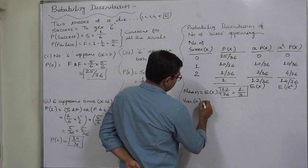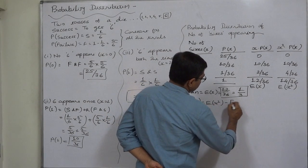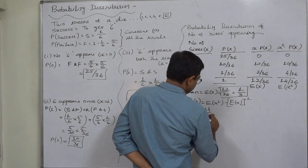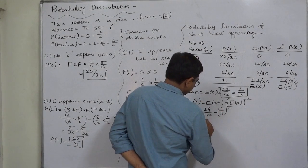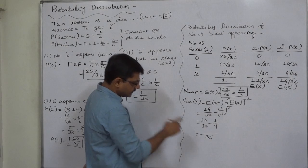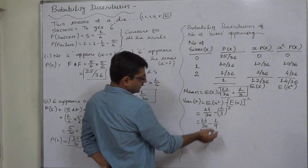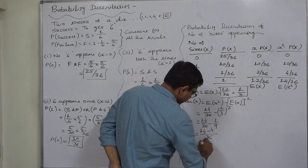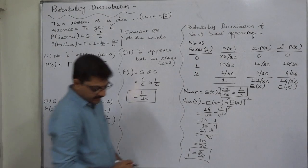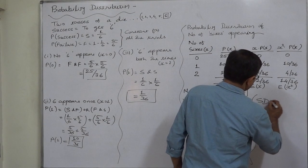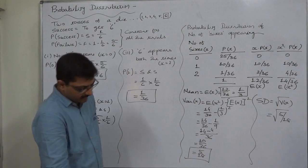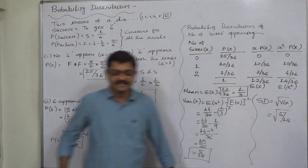Variance equals E(X²) minus [E(X)]² — that is 14/36 minus (1/3)², which is 14/36 minus 1/9. Taking 36 as LCM: 14/36 minus 4/36 equals 10/36, or 5/18. The variance is 5/18. Standard deviation equals the square root of variance, which is the square root of 5/18. You can simplify using a calculator. That's it, thank you very much.